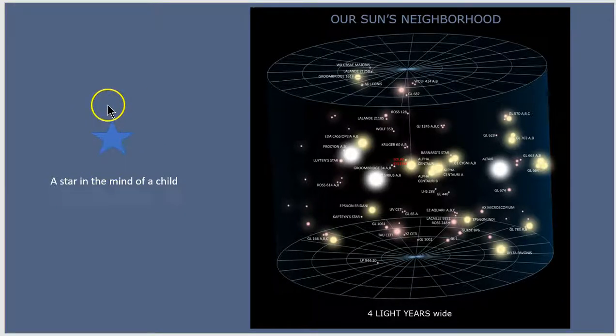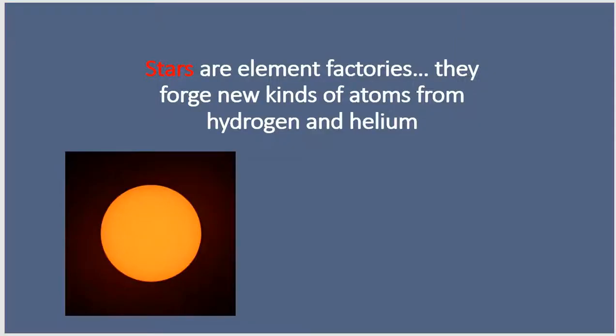But real stars are giant balls of gas, hydrogen and helium gas. And we'll learn later in the course that these stars, because of what's happening inside the cores of stars where hydrogen is being fused into helium, that releases light and energy and heat. But in addition, stars are factories for creating new kinds of elements. The smallest unit of elements are atoms, so stars are forging new kinds of atoms from hydrogen and helium gas.